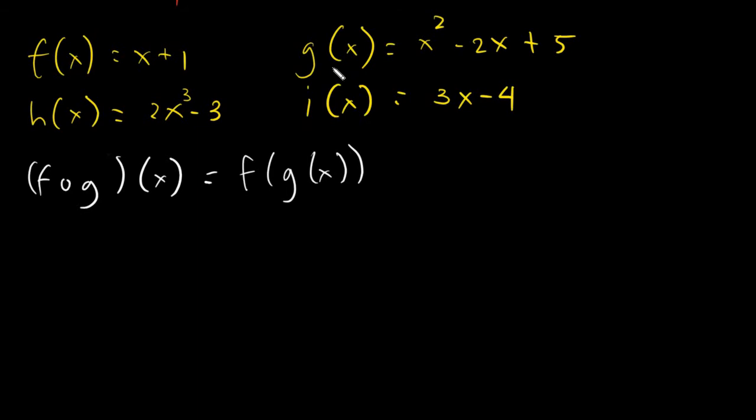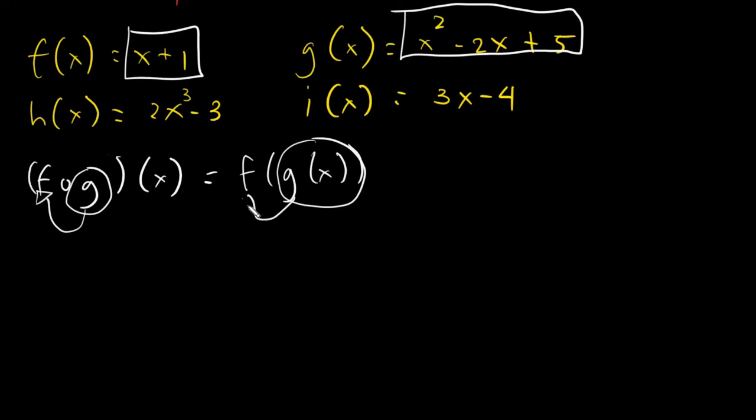The first letter is g. And what is the value of g? Let's try to box the value of g. This one, it's x squared minus 2x plus 5. And now, let's take a look at f. f is just simply x plus 1. So what happens here is, whatever is inside here, or the last letter, you will put it inside the first letter.